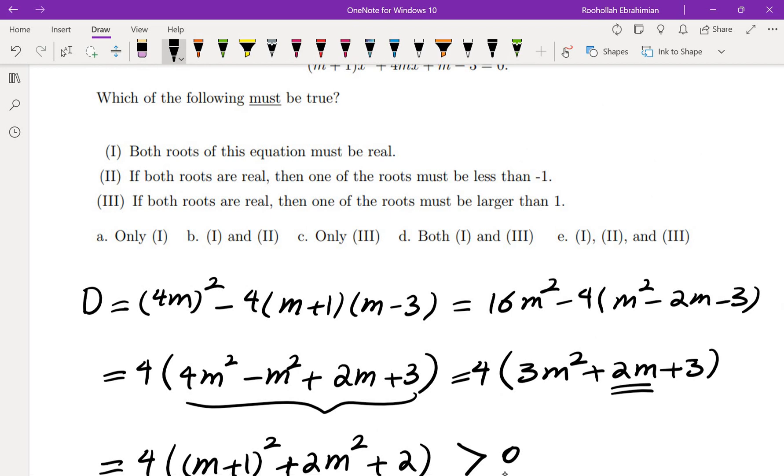It means both roots are in fact real. So the first one is always true. Okay it means it can't be c. But in fact we'll have to check the rest of them.